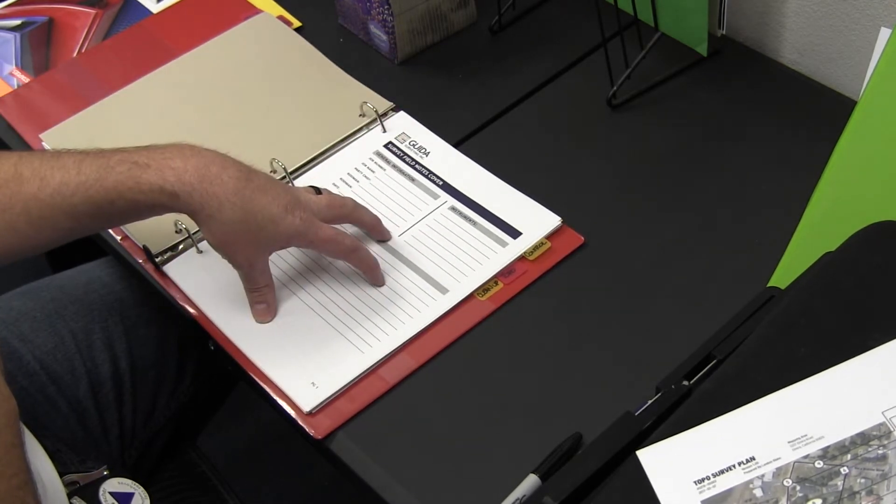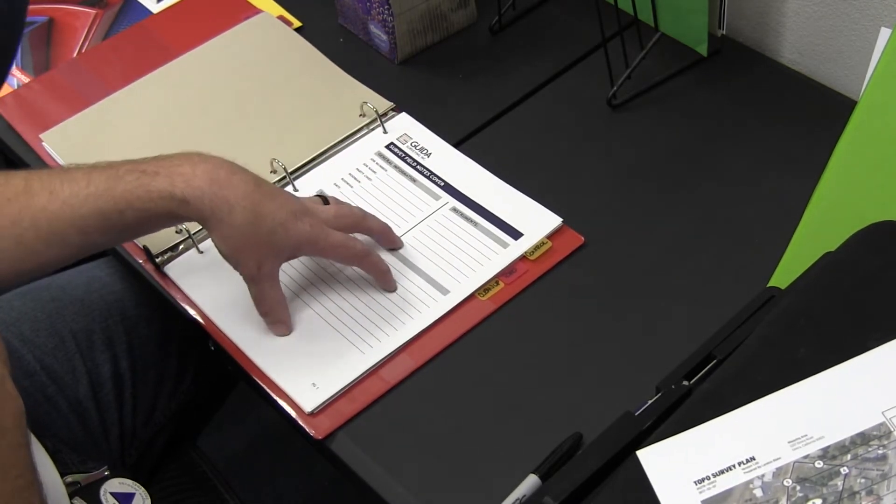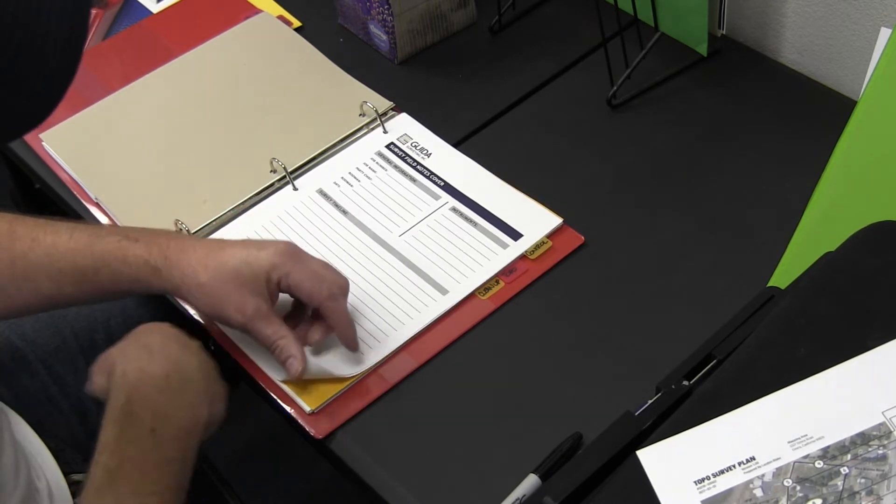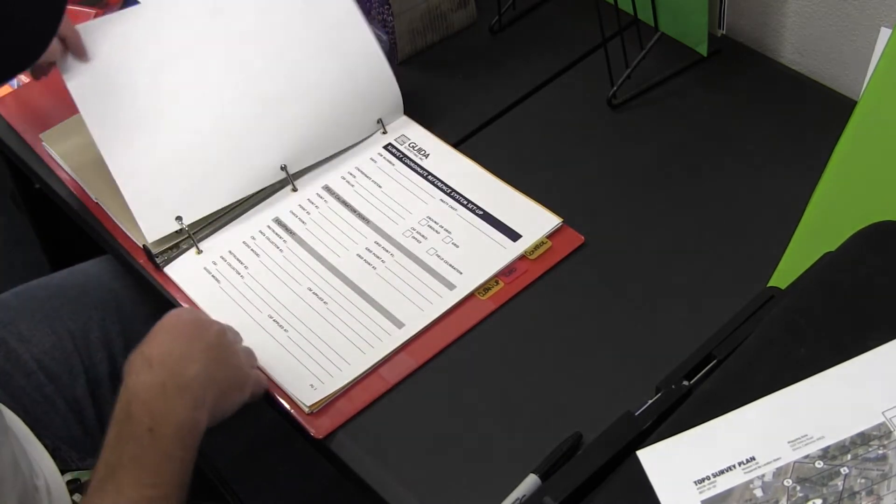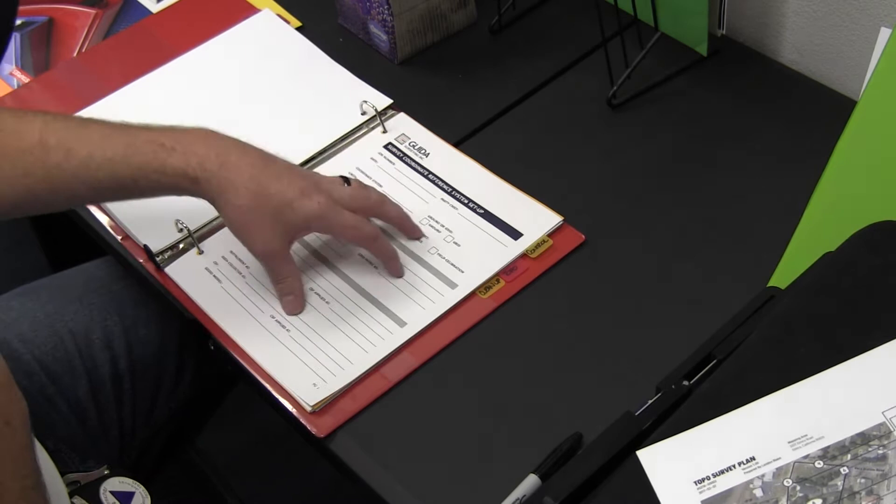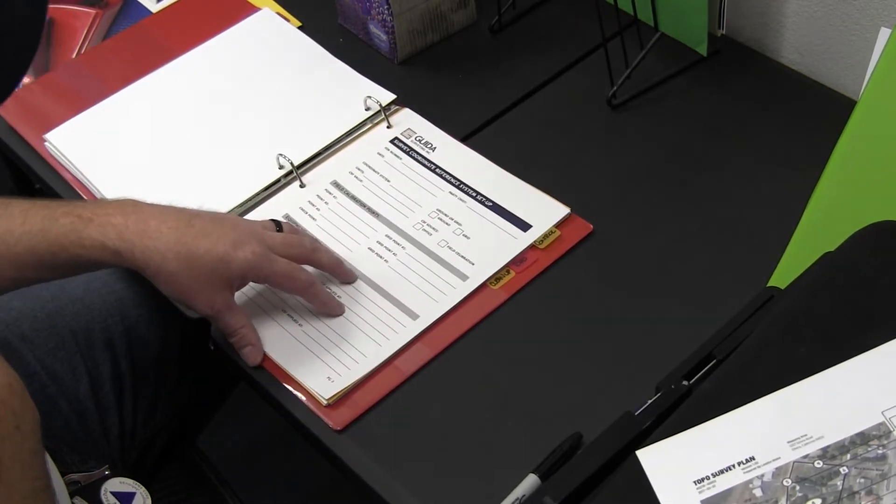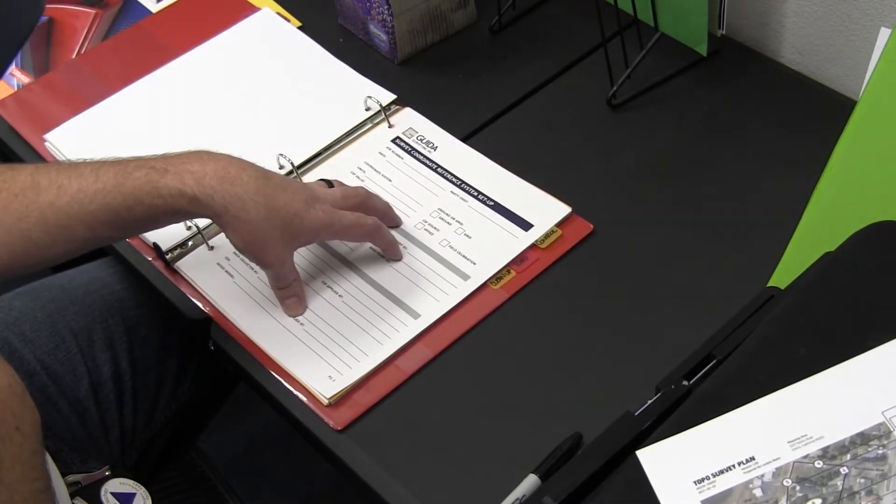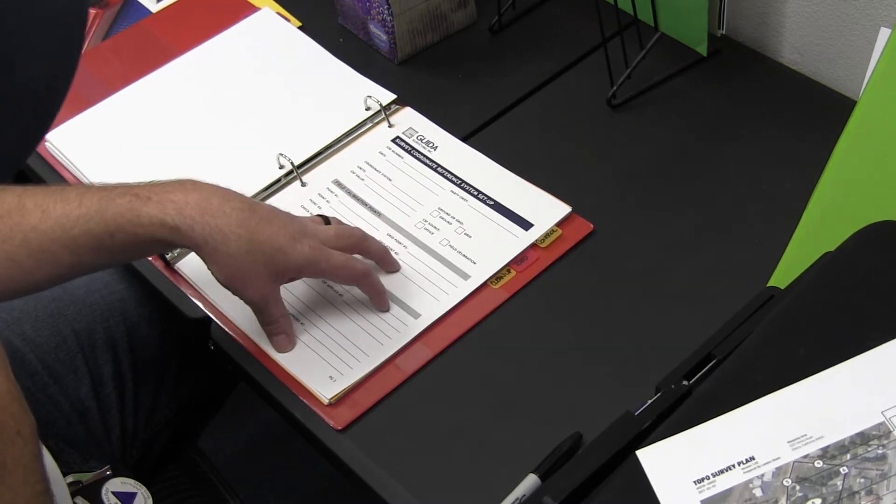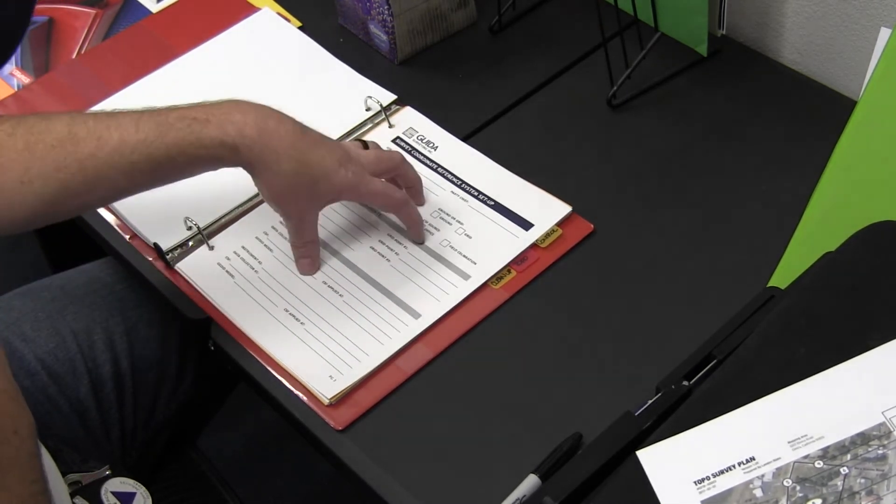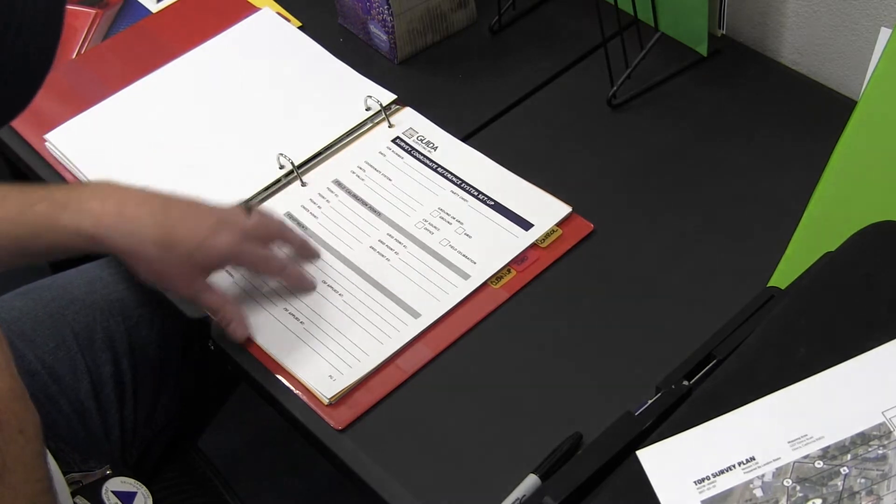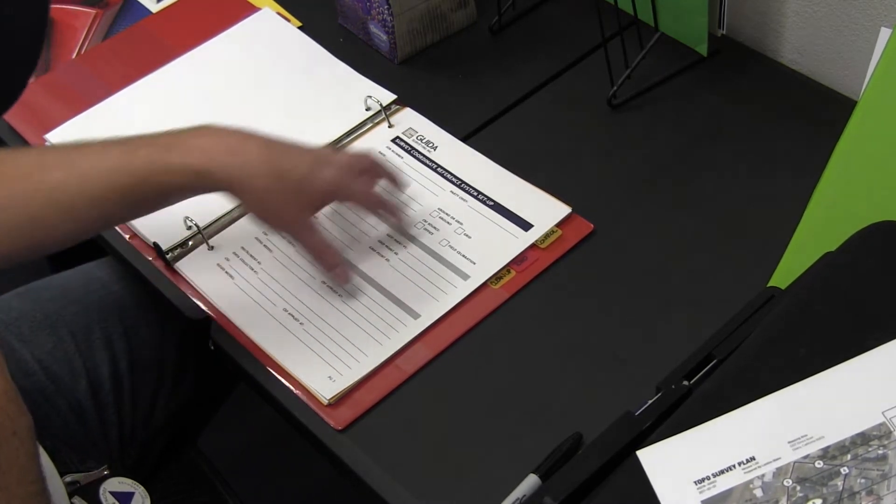The second page in the setup section goes over the coordinate reference system that the crew is set up in their data collector. I always want them to think about that: are they ground, are they grid, what zone are they working in, have they done a calibration, how did they apply that calibration in their equipment or data collector? All that information is here and gets filled out by the crew.